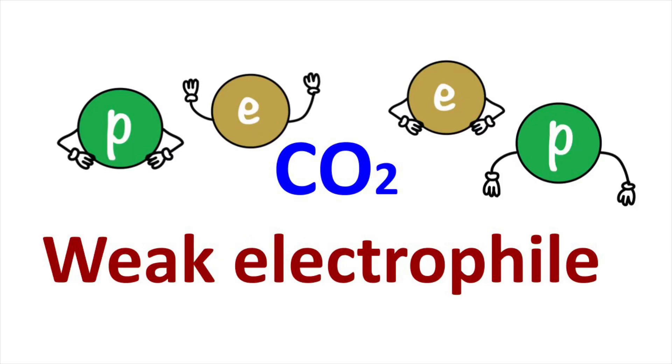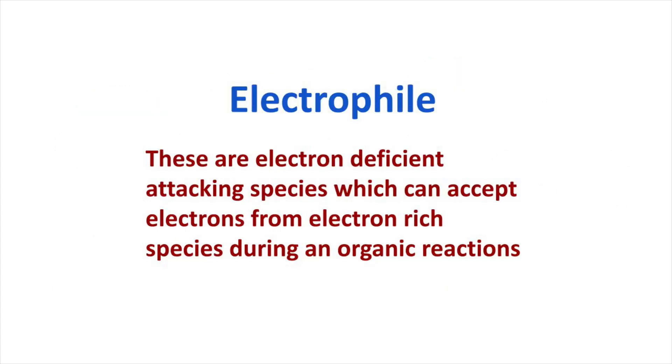Welcome to Aurora Chemistry for Everyone. Let us analyze why carbon dioxide is considered a weak electrophile. First, let's see what an electrophile is. An electrophile is an electron-deficient attacking species which attacks electron-rich species during organic chemical reactions.